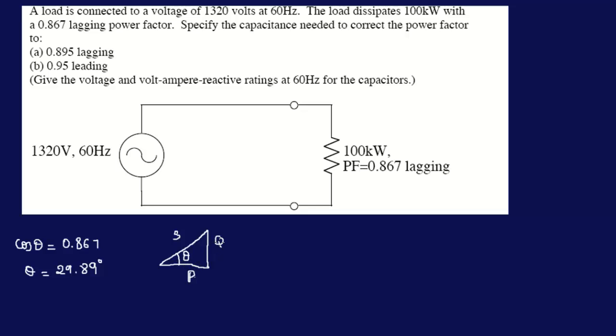In order to find Q, here we have tangent of theta is Q over P. So therefore Q is equal to P tangent of theta. So our initial Q here is, let's call it Q1. Q1 is equal to 100k times tangent of 29.89 degrees.